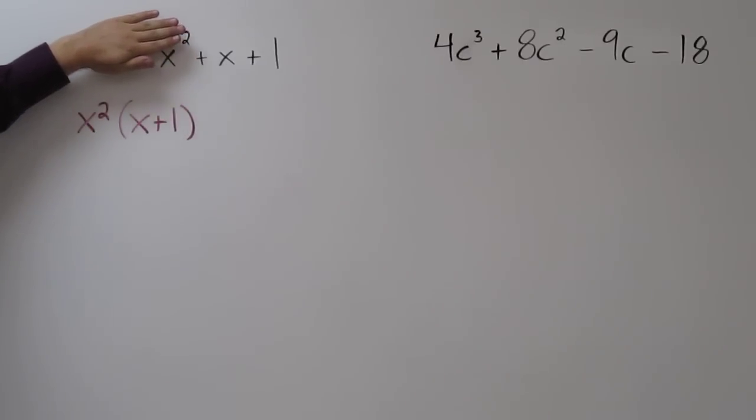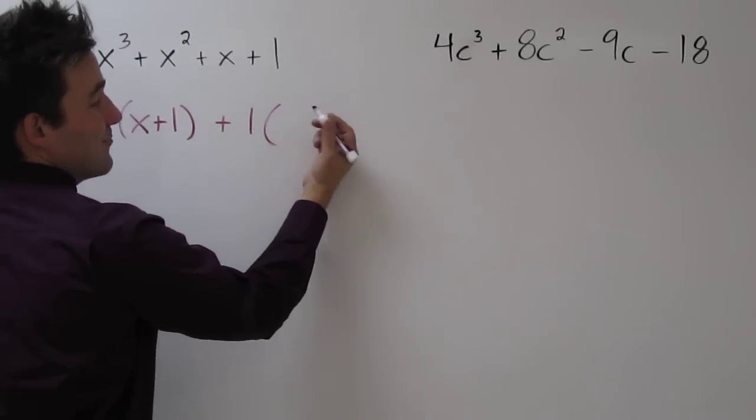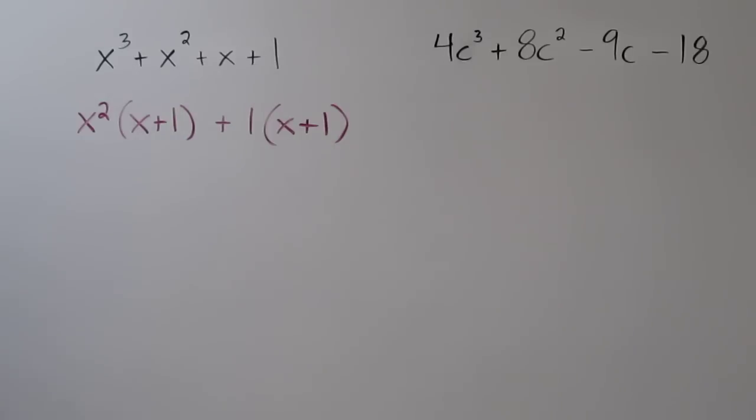The only thing they share in common is the factor 1. So if we factored out a 1, we're just left with what we started with. But the good news is that each of these binomials match. And when that happens, you can use factoring by grouping.